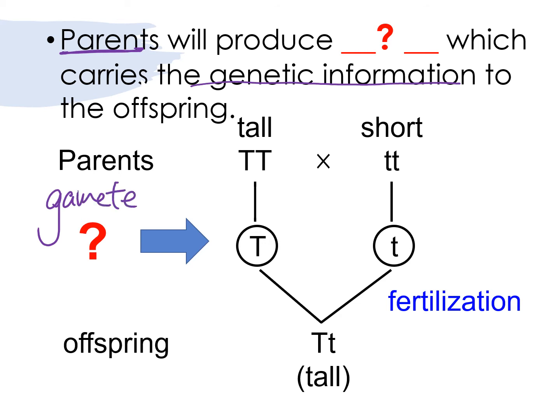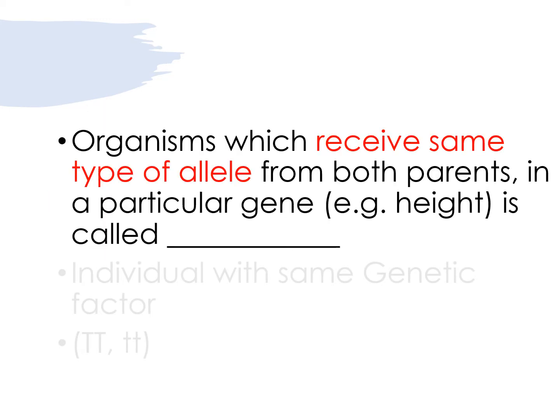The male gamete or the female gamete. For the human, it would be the sperm and the egg. For the organisms which receive the same type of allele from both parents.